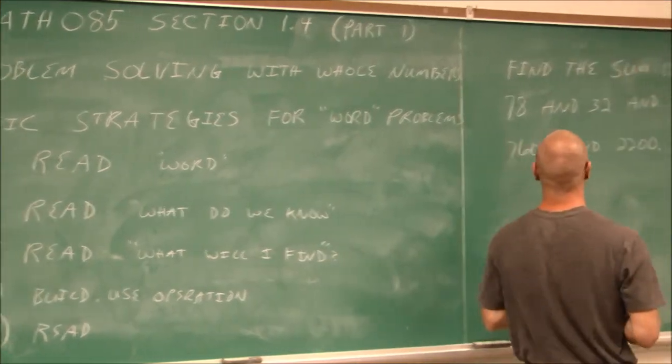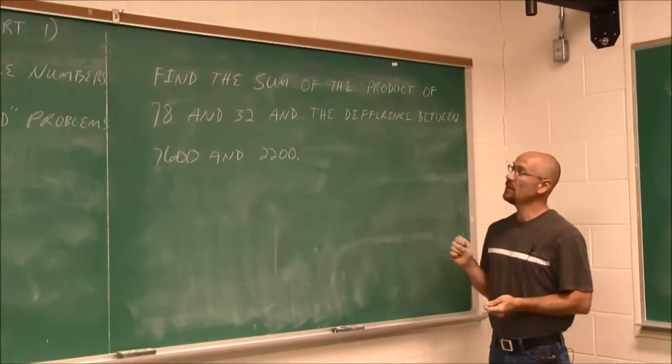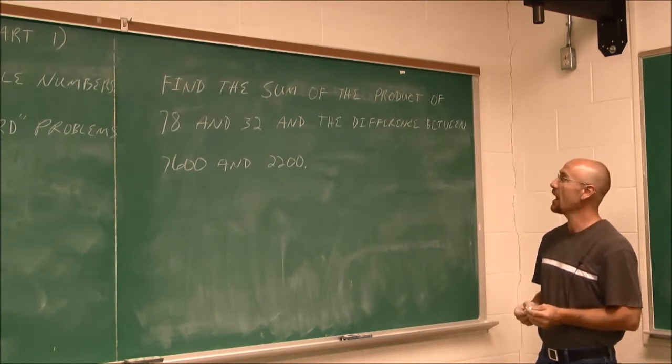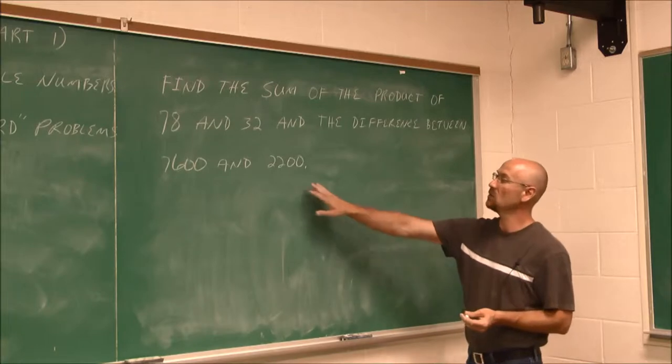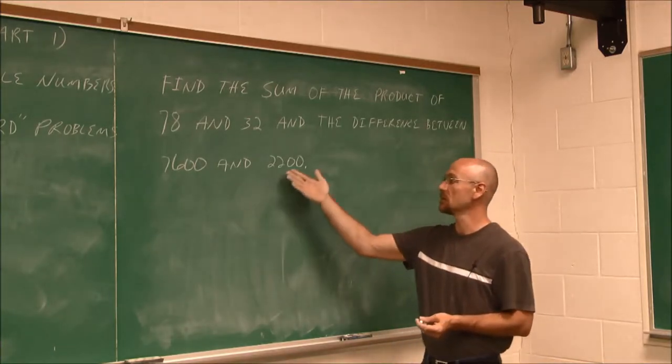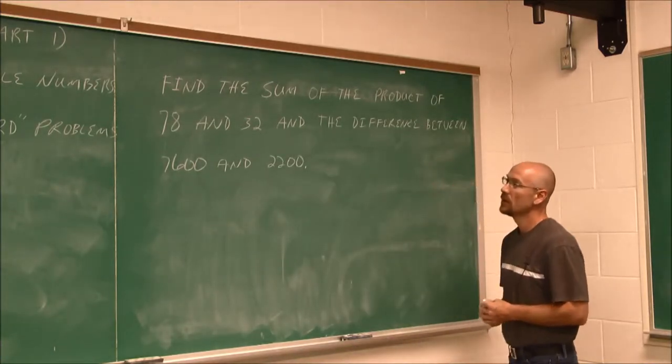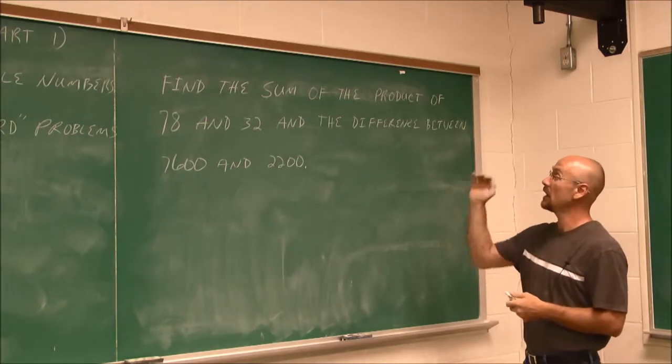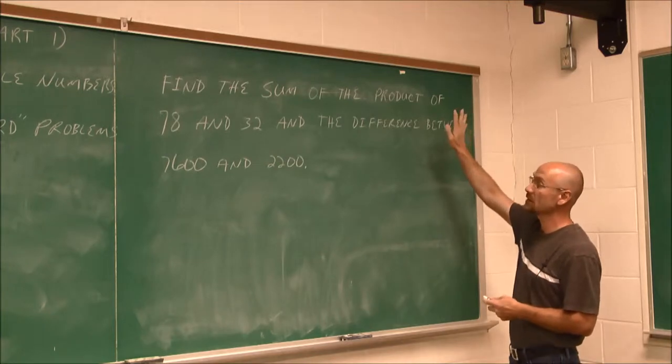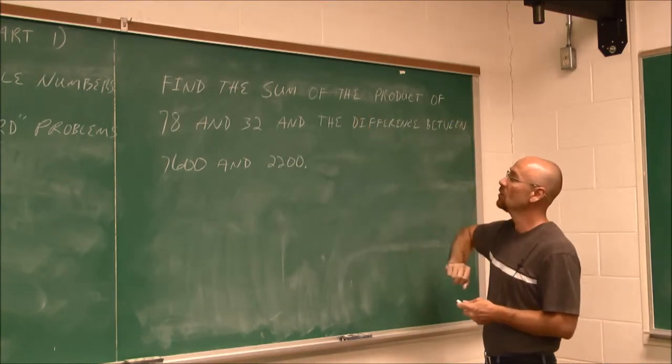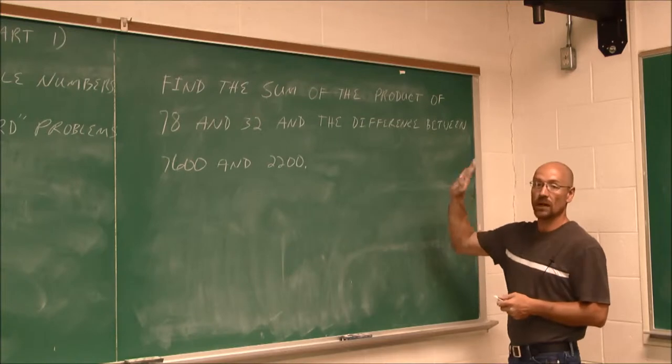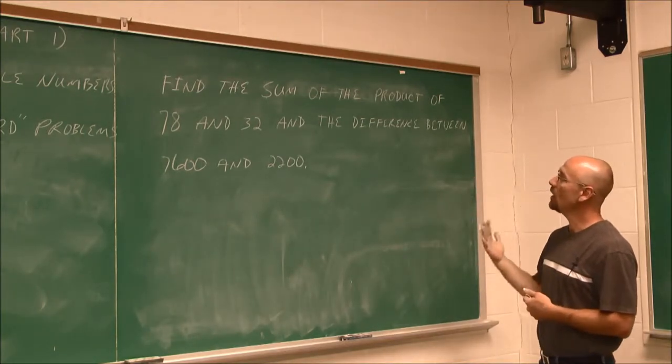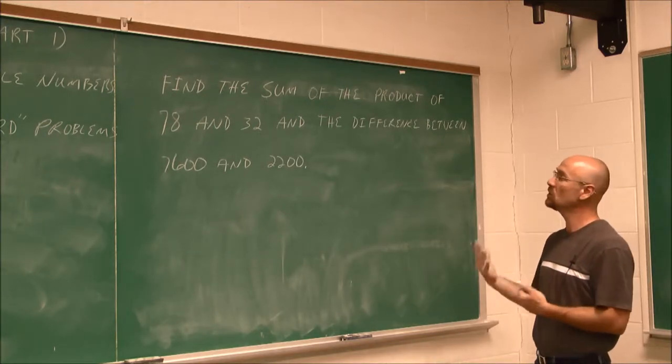Let's look at our first example here. It says, find the sum of the product of 78 and 32 and the difference between 7,600 and 2,200. So I read it the first time. Do I understand the words? For me, yes. I know what a sum is. I know what a product is. I know what a difference is. And I can see what numbers we have here. So I understand the words. Now I'm going to read it a second time. And I'm going to ask myself, well, what is this giving me? What do I know?